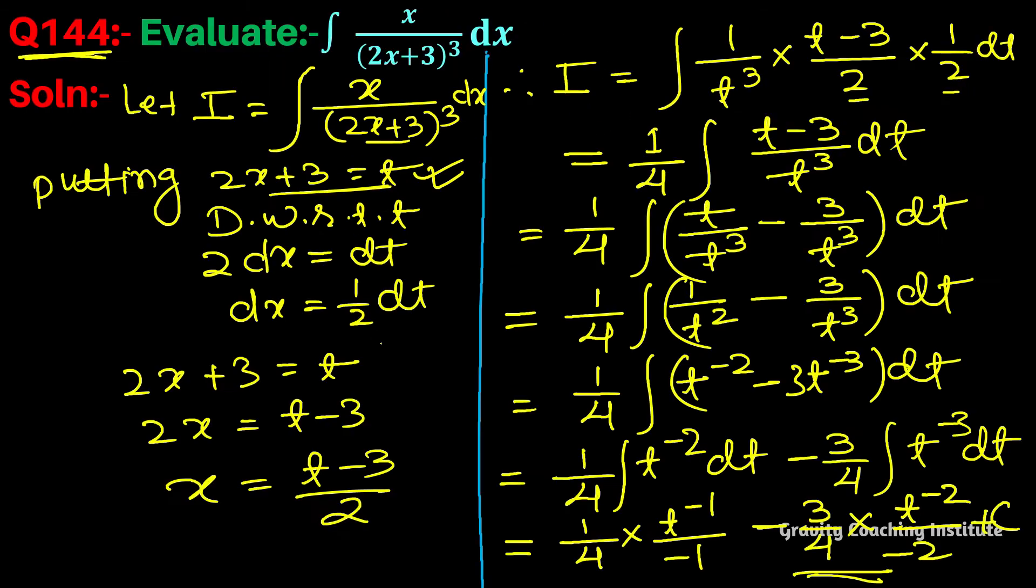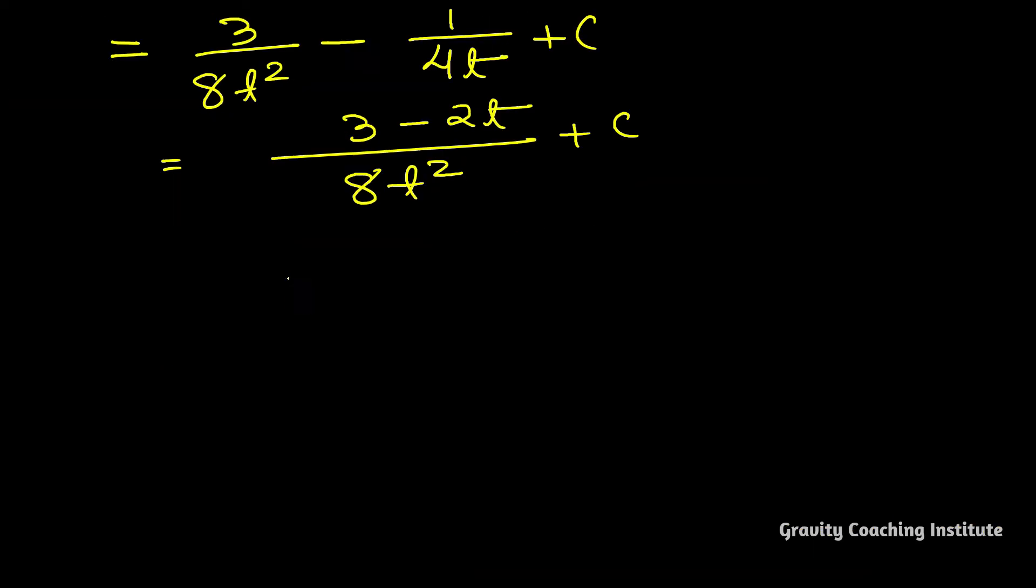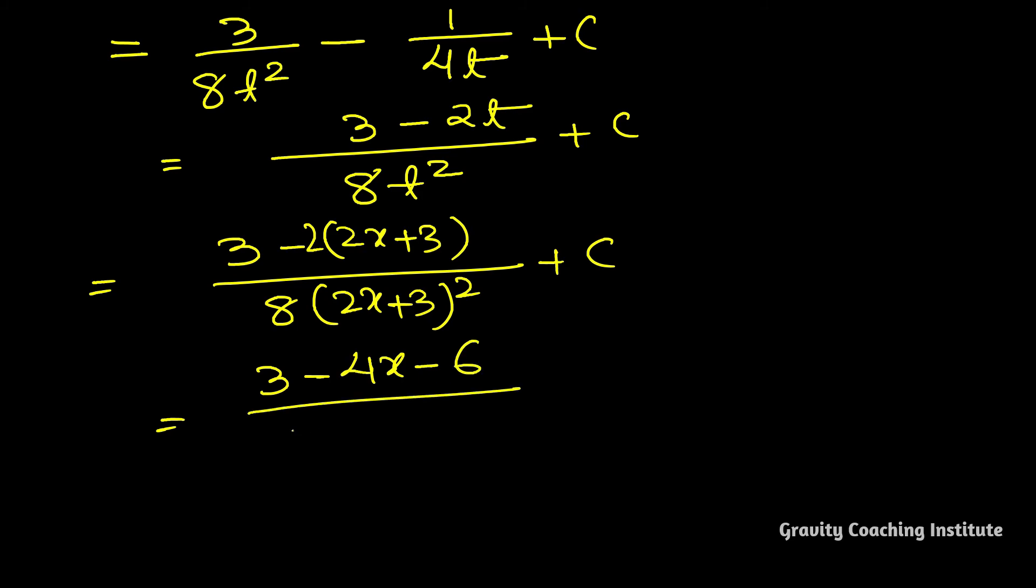Substituting t = 2x+3 into the denominator gives 8(2x+3). This equals (3-4x-6)/(8(2x+3)²), which simplifies to (-4x-3)/(8(2x+3)²).